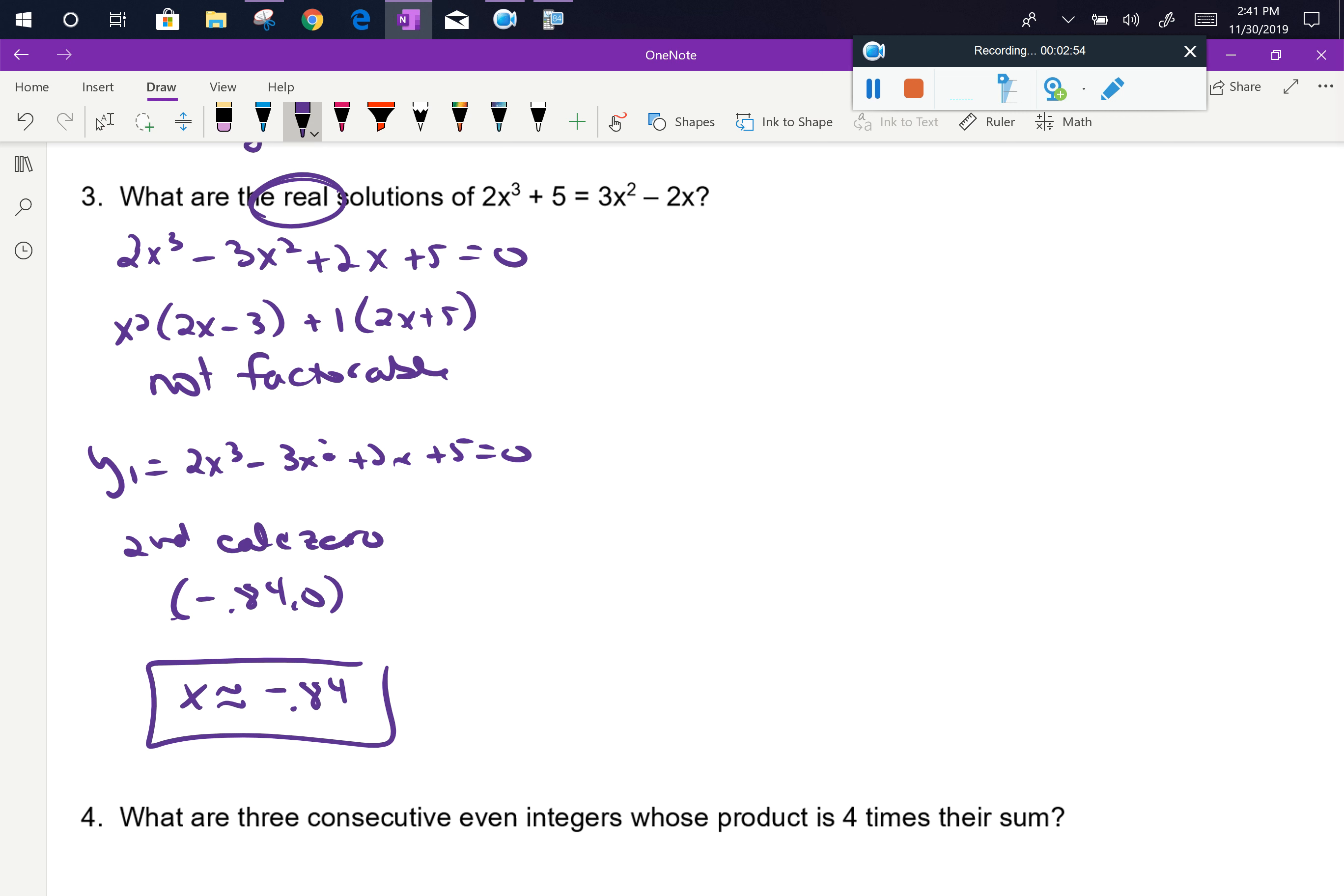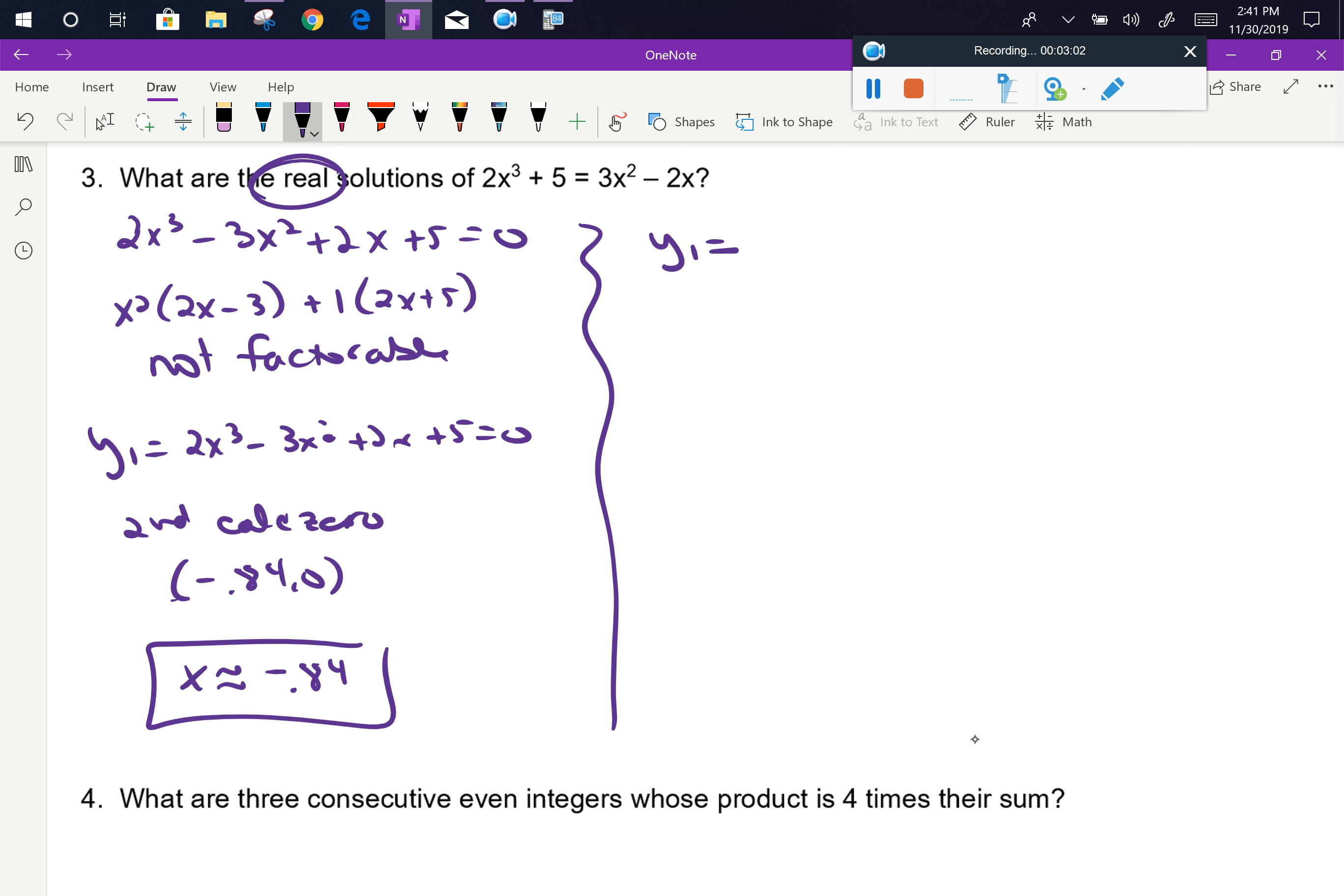Now, if I had had reason to believe that I wasn't going to be able to factor in the first place, there's actually an alternate method. The alternate method is to put the left side of the problem into y1, and the right side of the problem into y2.